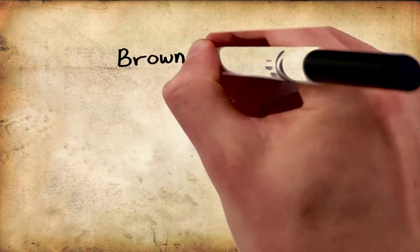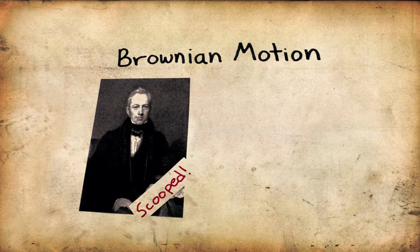This is called Brownian motion, despite the fact that botanist Brown wasn't the first to discover it, and similarly, Einstein wasn't the first to describe it mathematically.